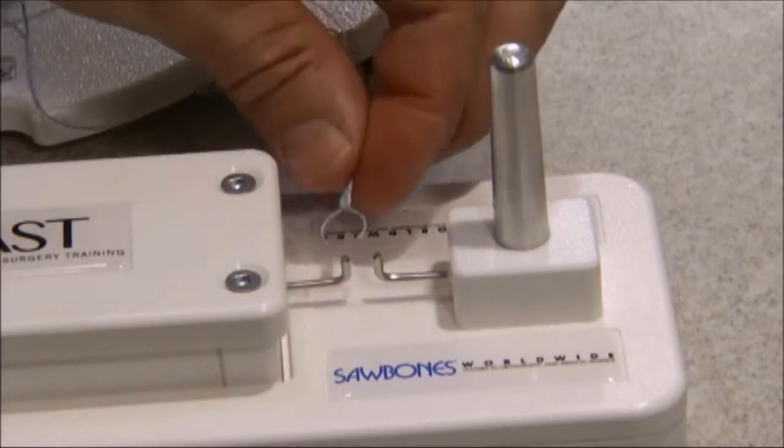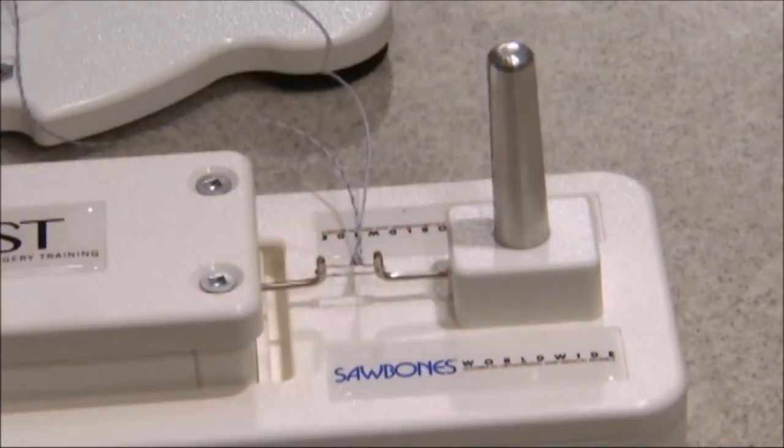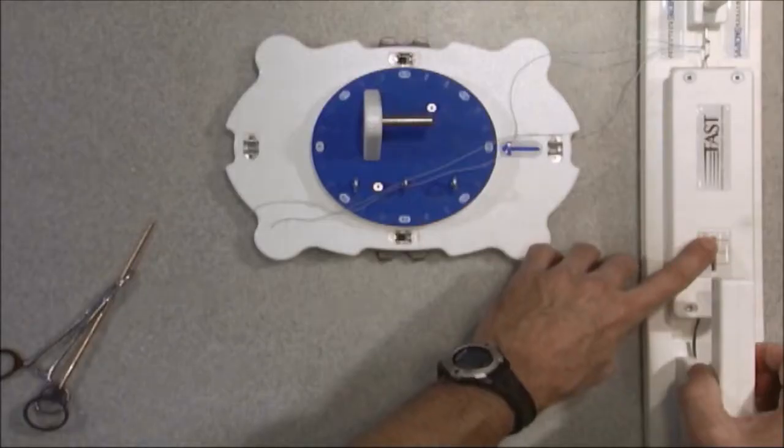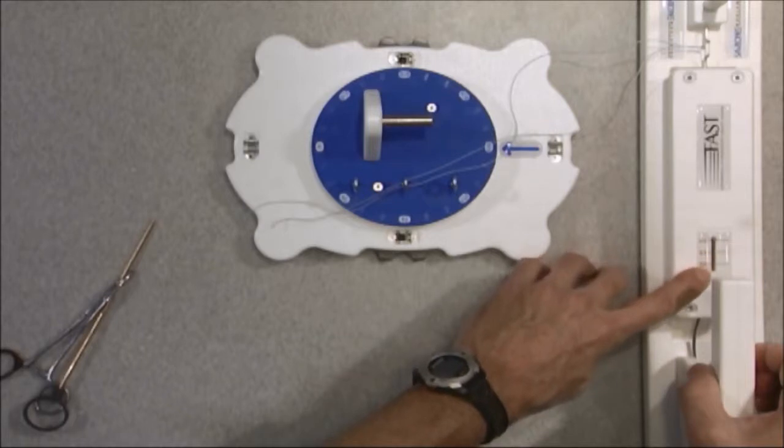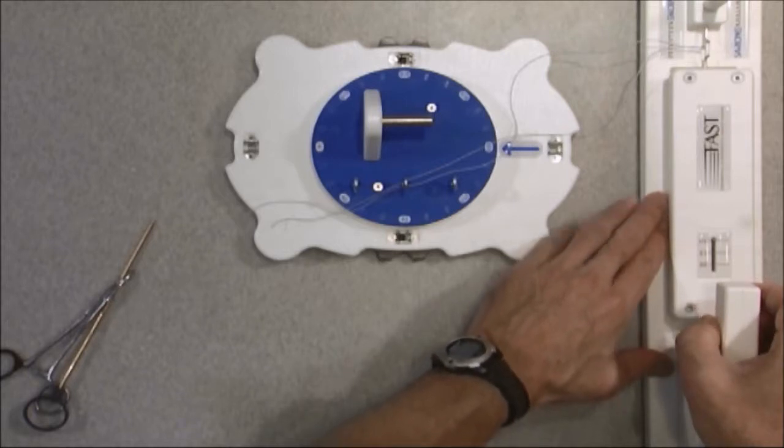And then if we zoom back out for a second, once you load the knot on there, back here on the device we have a spring gauge: 10, 15, 20 pounds. When I actuate the handle, that is going to come up and it's going to stress the loop. And so I'm going to stabilize the base.